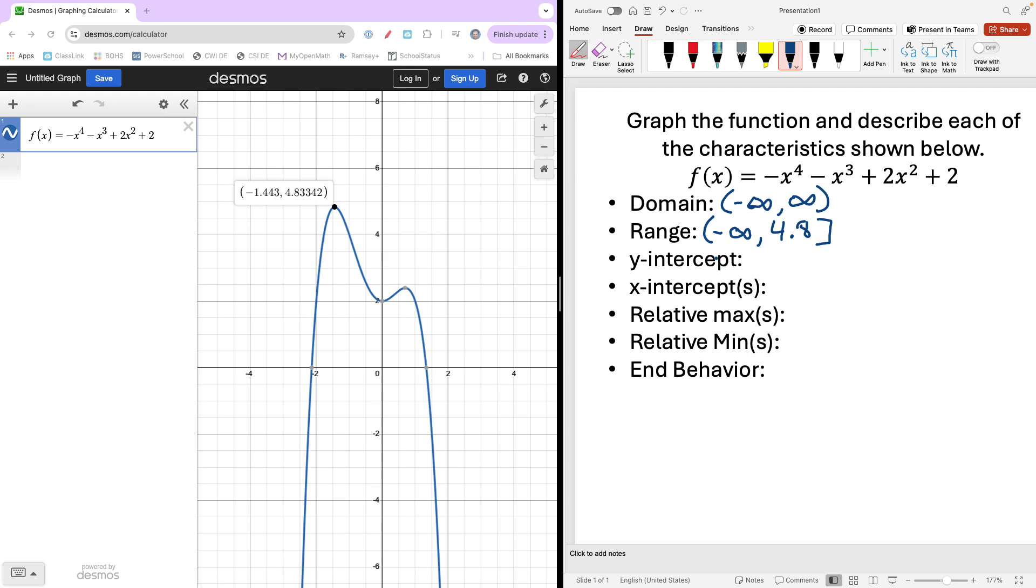Okay, let's describe the y-intercept. Of course, it's right there. That's a nice value for us: 0, 2. Let's record that as a coordinate. So (0, 2) is our y-intercept.